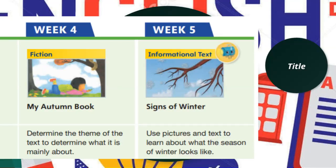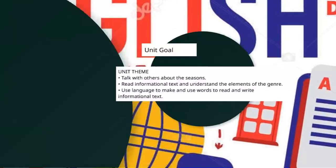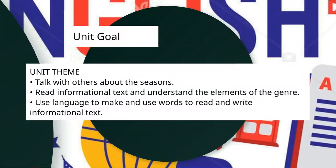In week four we will read the fictional story 'My Autumn Book' and determine the theme of the text. In week five, 'Signs of Winter,' we will use pictures and text to learn about what the season of winter looks like. The unit goal is: we will talk with others about different seasons, read informational text and understand the elements of the genre, and use language to read and write informational text. Thank you everyone for listening!